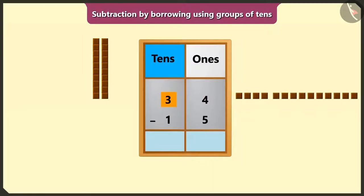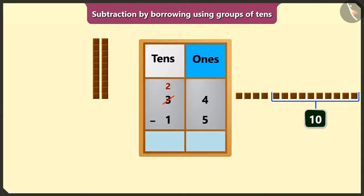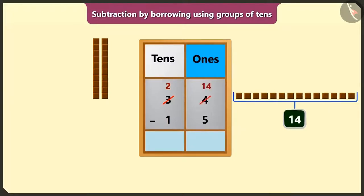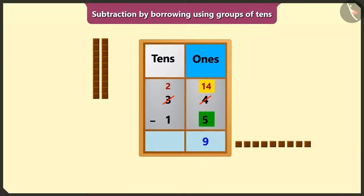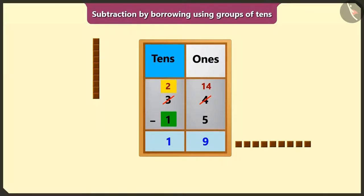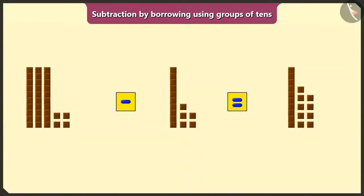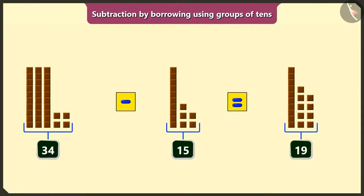If we subtract 1 ten from 3 tens in the box of tens, then we would have 2 tens. We will write 2 at the top of the box of tens. Now we will have 1 borrowed 10, meaning 10 ones plus 4 ones equal to 14 ones in the box of ones. If we subtract 5 ones from 14 ones, we would have 9 ones left, so we write 9 in the place of ones. If we subtract 1 ten from 2 tens, then we will have 1 ten left, so we write 1 in the box of tens. This way, if we eat 15 chocolates from 34 chocolates, then we would have 19 chocolates left.